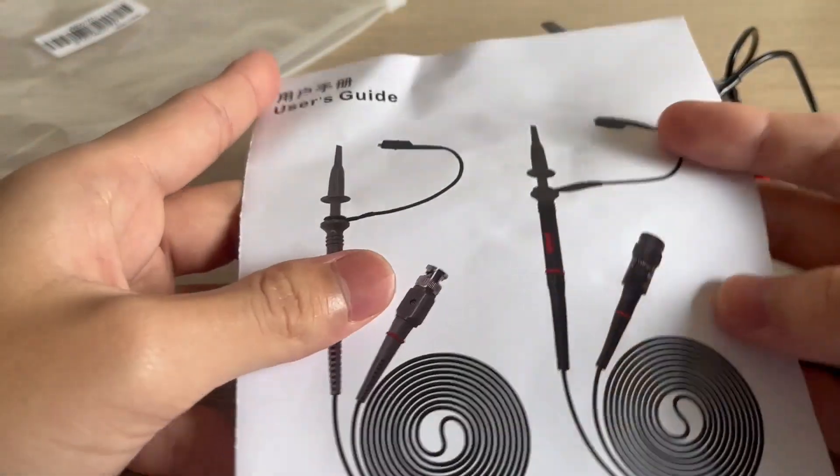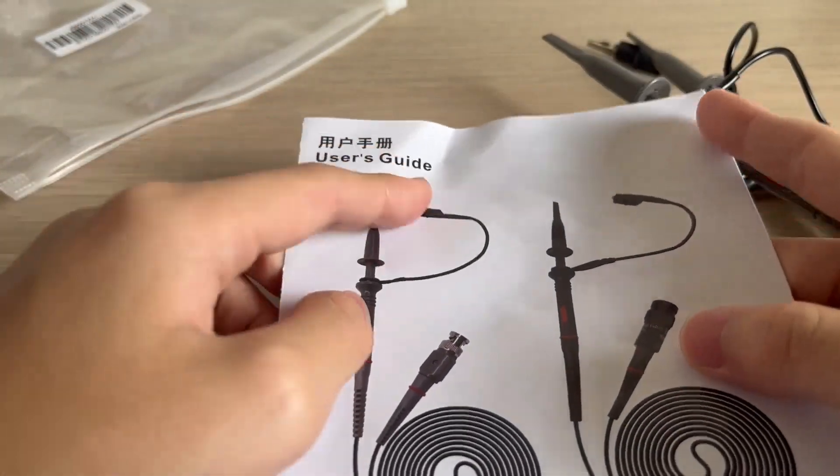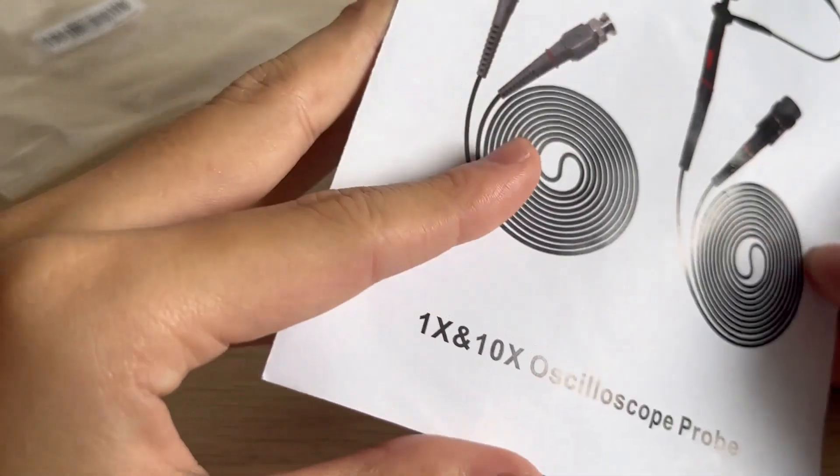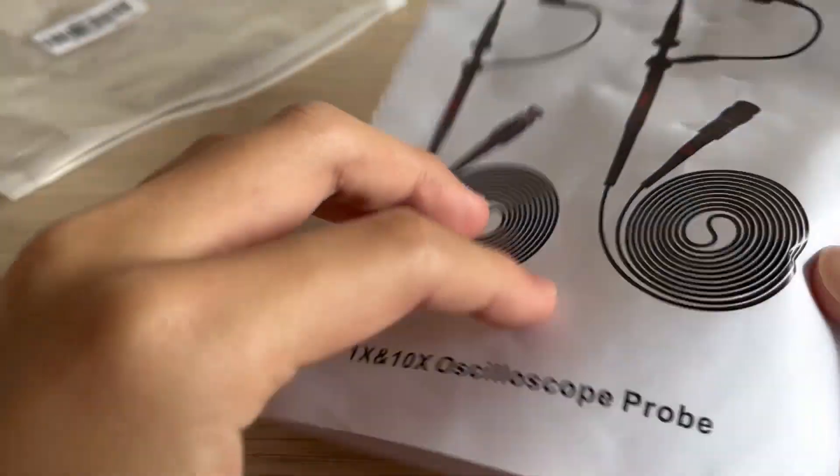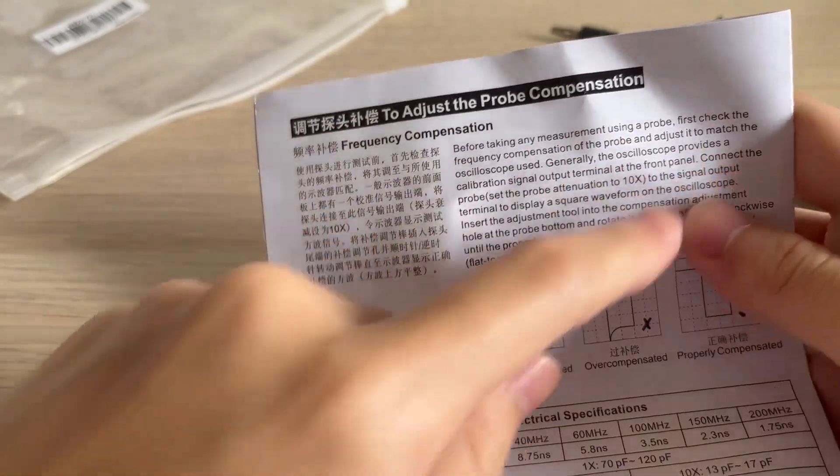This is called a yonghu shouce, a user's guide, and it's a bilingual instruction. Before taking any measurement using a probe, you must first check the frequency compensation of the probe. It's quite well written and it has all the specifications.